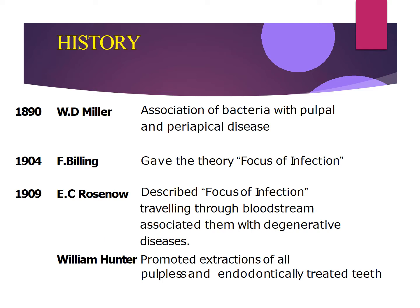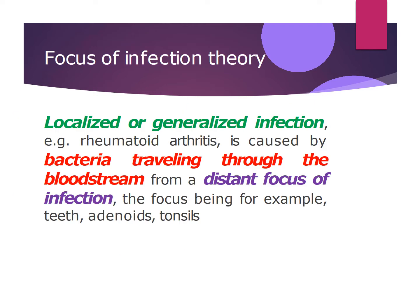If we look at history briefly, in 1890 W.D. Miller was the first person to associate bacteria with pulpal and periapical tissues. In 1904, F. Billing gave the theory of focus of infection. In 1909, E.C. Rosenow described the focus of infection traveling through the bloodstream and associated them with degenerative diseases. William Hunter promoted the extraction of all pulpless and endodontically treated teeth. The focus of infection theory states that localized or generalized infection like rheumatoid arthritis is caused by bacteria traveling through the bloodstream from a distant focus of infection, such as an infected tooth, infected adenoids or tonsils. This theory gained a lot of popularity during the early and mid 19th century, where they extracted infected teeth and removed adenoids and tonsils based on the assumption that infection from these sites can spread through the bloodstream and cause degenerative changes at far away sites.